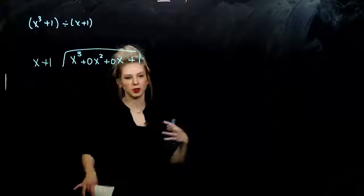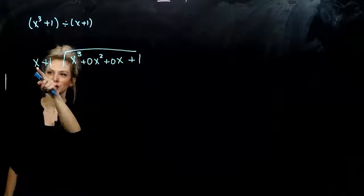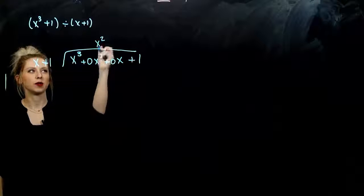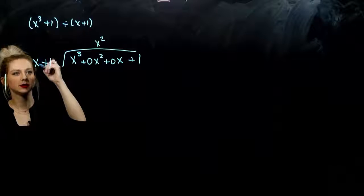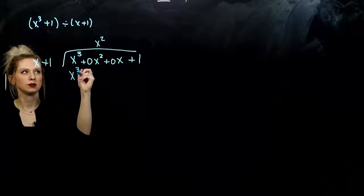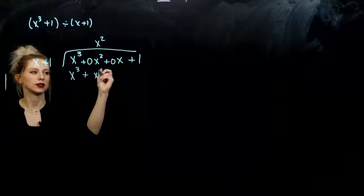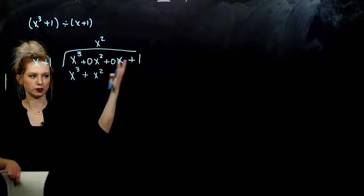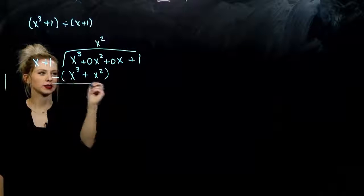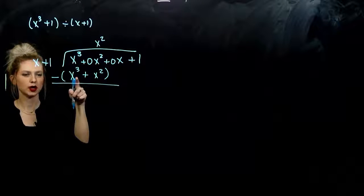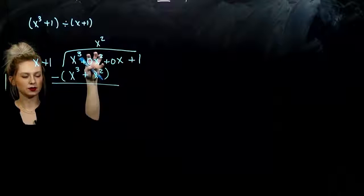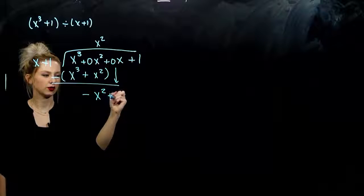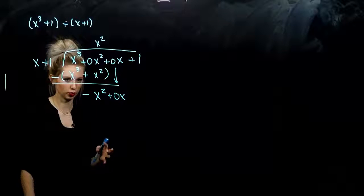Once we've plugged the holes, it just behaves like normal. What do I need to multiply x by to get me to x cubed? I need to multiply it by x squared. So x squared times x is x cubed. x squared times one is plus x squared. Do you see why we needed to plug that hole? Otherwise we'd be adding to the wrong term if it was smushed. So subtracting that entire quantity: x cubes are gone, and I've got zero minus x squared, so I've got a negative. And we bring down what's next — bring down the placeholder.